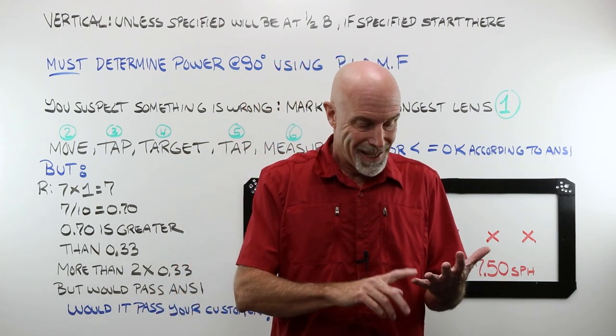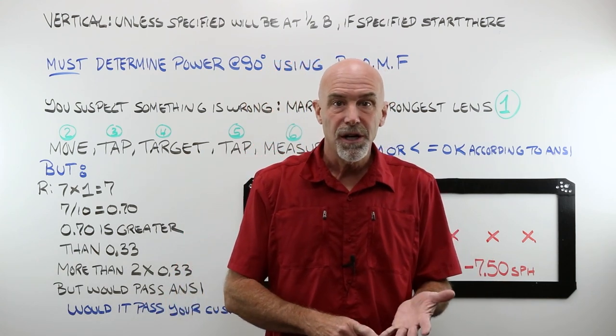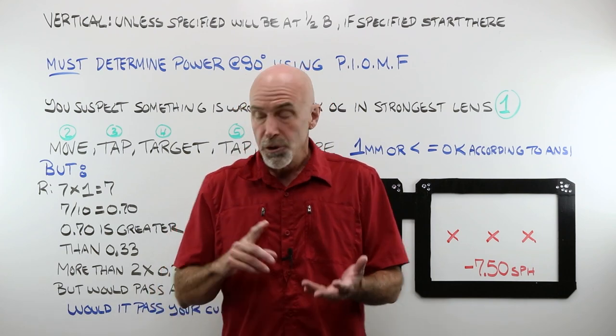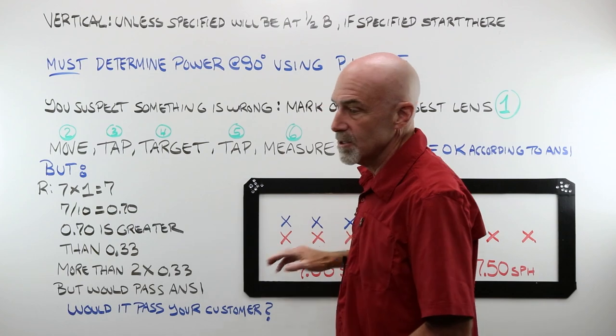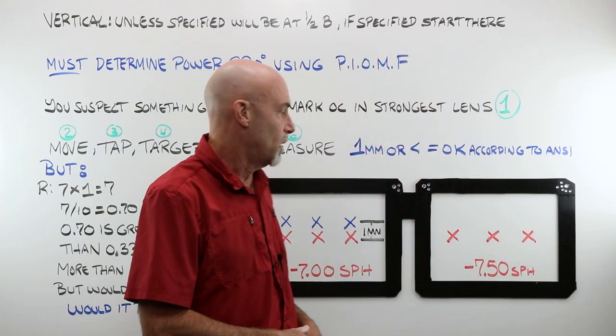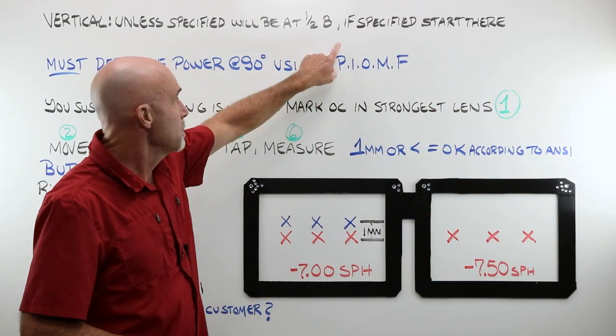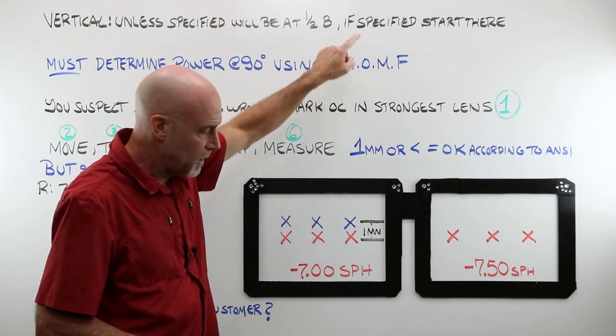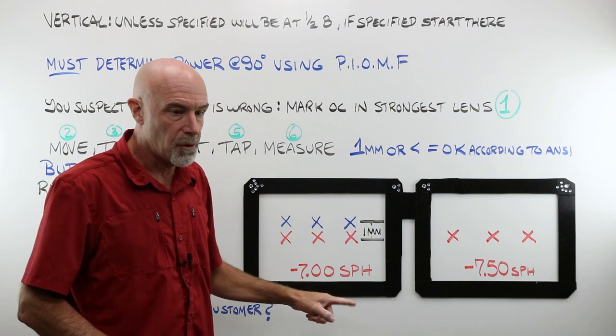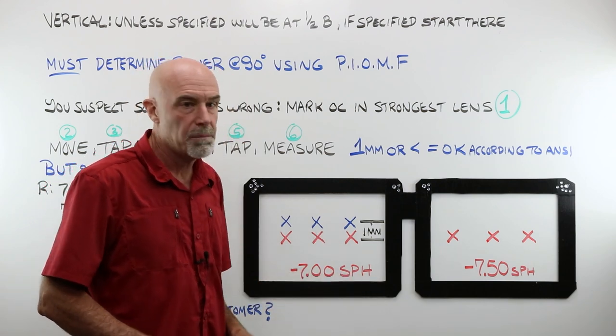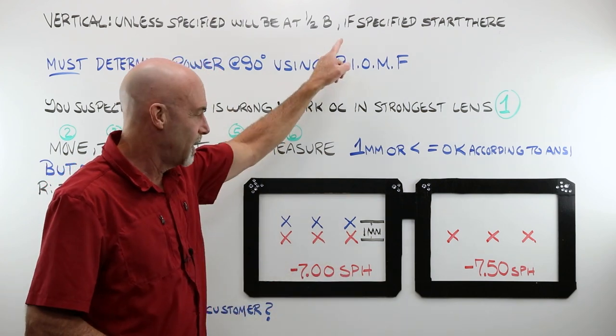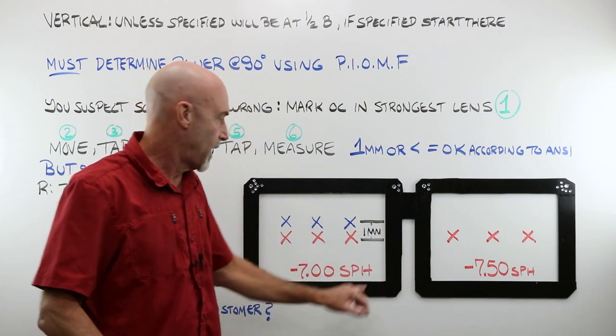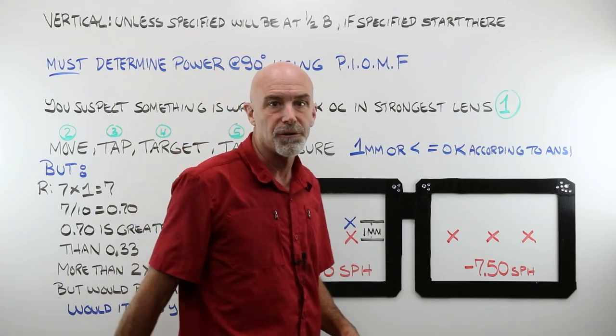This is where it comes down to you, right? ANSI is not the final arbitrator here. You are. You are the one who makes the decisions on what passes and what doesn't. Because of what we talked about here, for vertical, applying Prentice's formula wouldn't even apply. Think about it, right? And actually, let's take that one step further and let me show you what I mean by that. And then we'll get to horizontal.